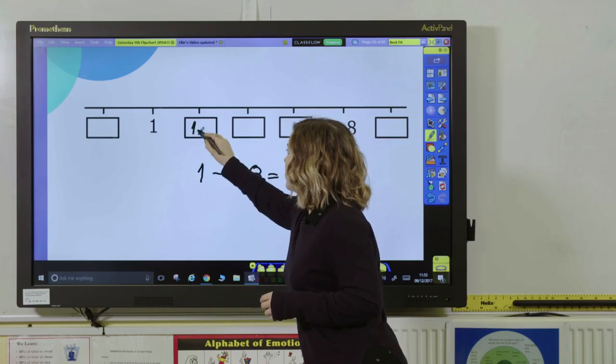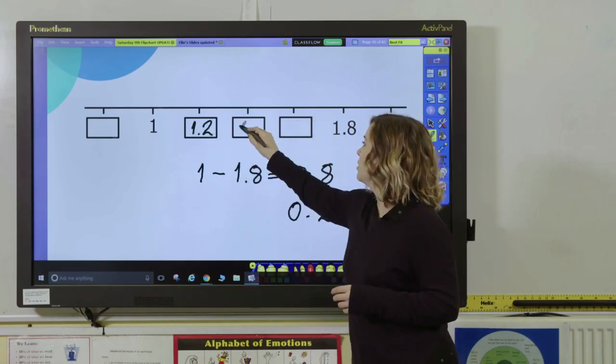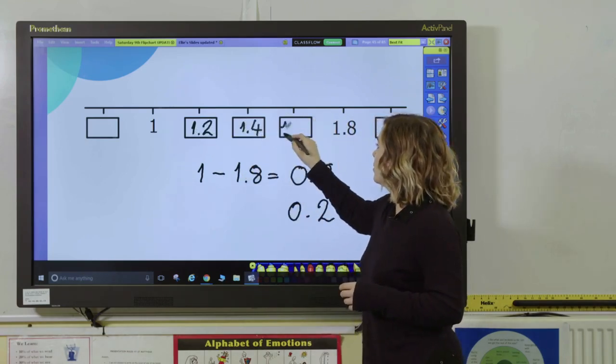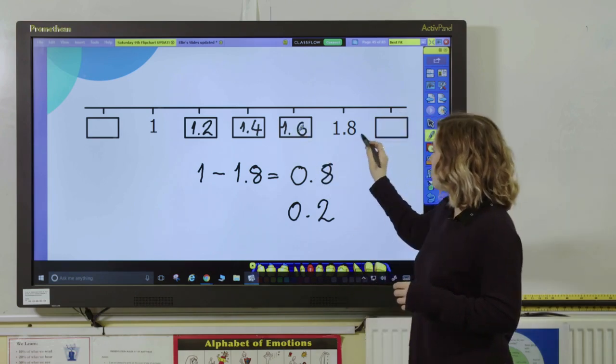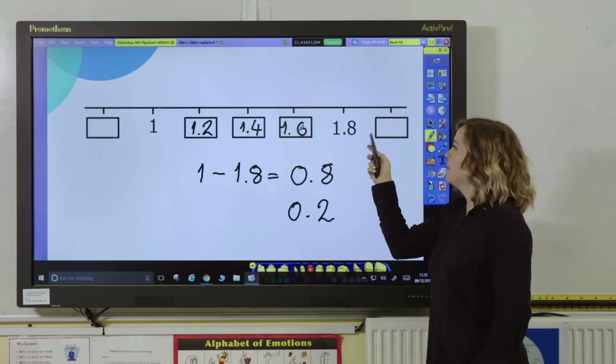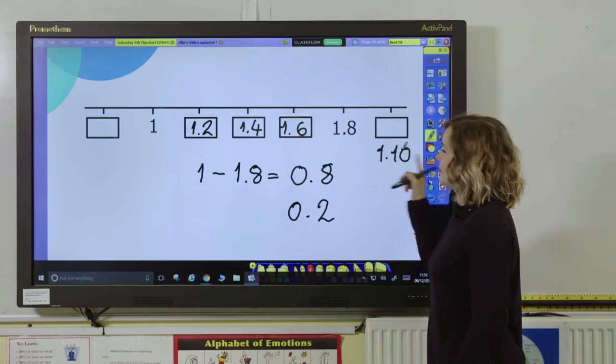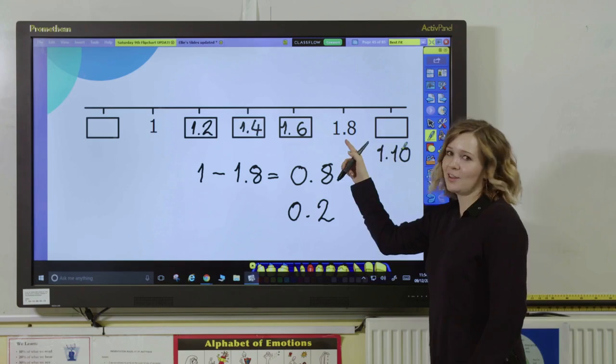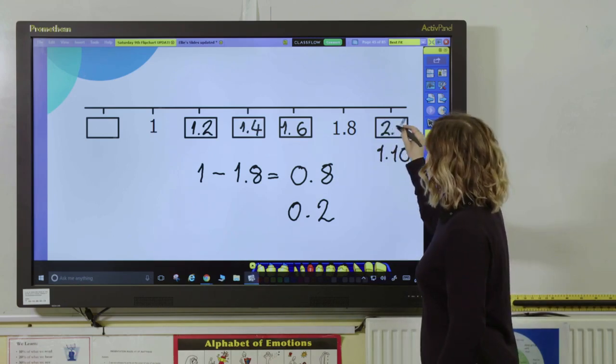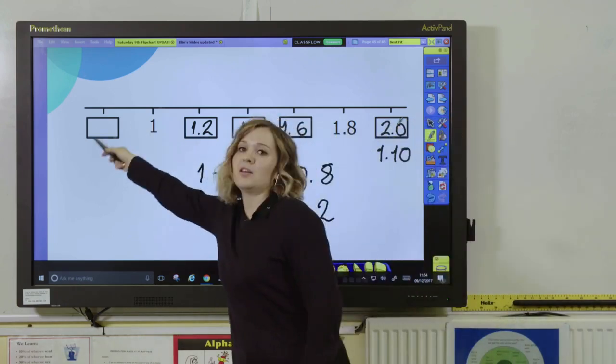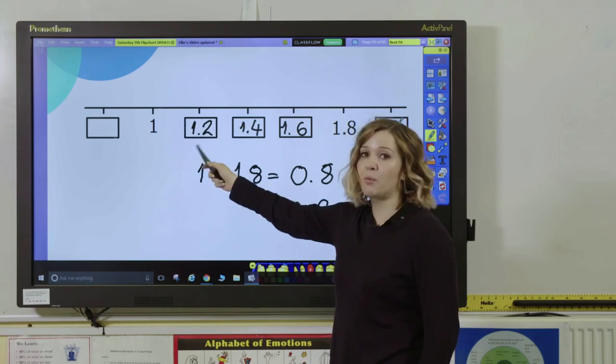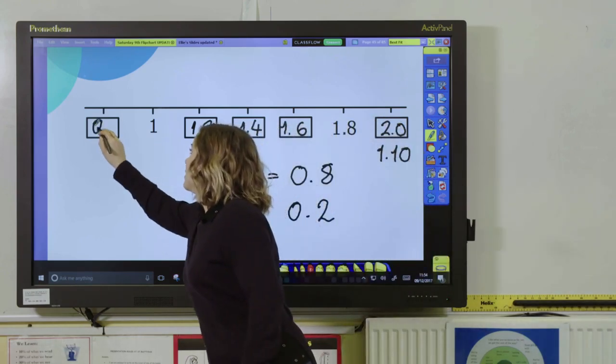So pupils should then be able to do this as 1.2, 1.4, 1.6, 1.8. This one make sure that they don't start doing 1.10. That is not 1.8 and 2 tenths so they need to know that that goes up to 2. And here again you're crossing the boundary of the ones so it's going down to 0.8.